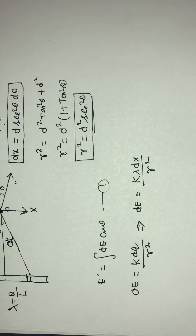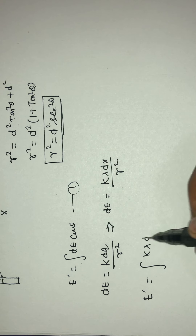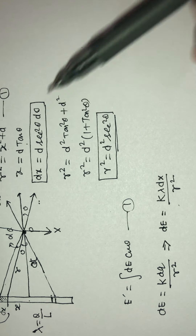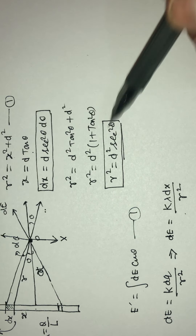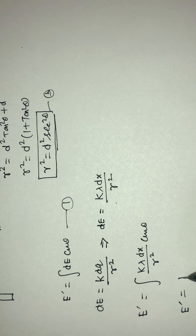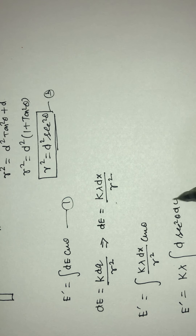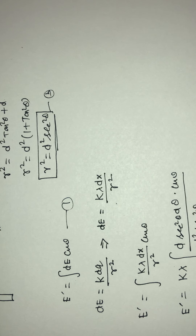So E = integration of k·lambda·dx / r² · cos(theta). Now substituting dx = d·sec²(theta)·d(theta) and r² = d²·sec²(theta) into this expression, k·lambda comes outside as a constant. The sec²(theta) terms cancel, giving E = (k·lambda / d) · integration of cos(theta)·d(theta).